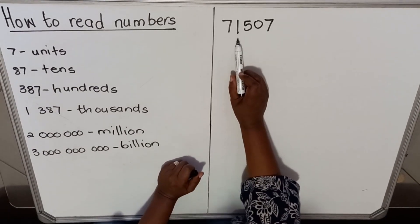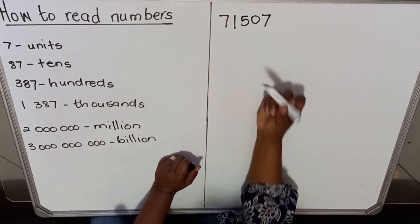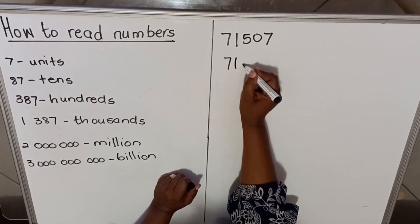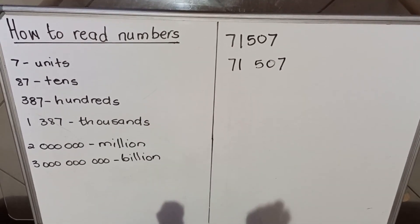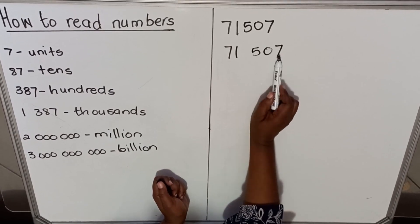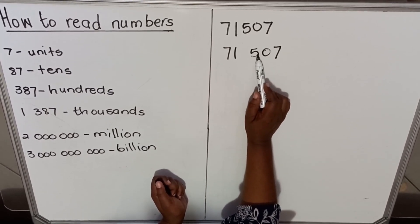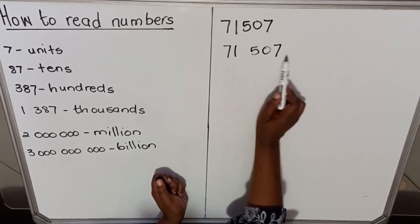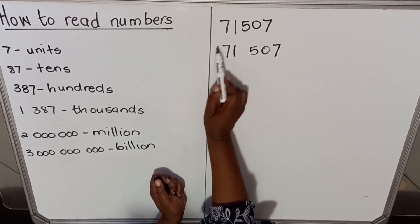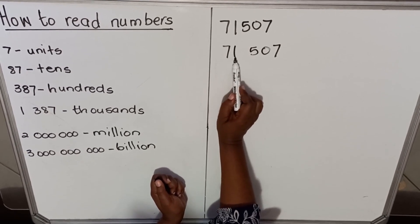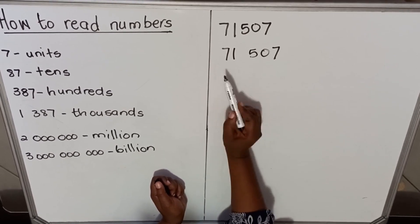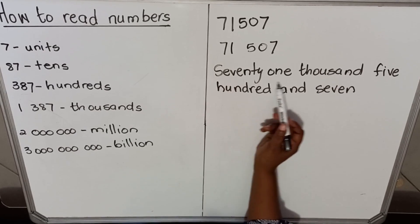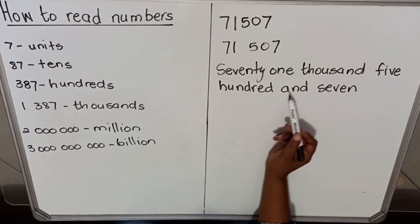Let's do two examples. When you look at this number it has one, two, three, four, five digits. To make it easier for yourself, make a space here. So it's one two three, space, one two three — that's how it's done. These are units, tens, hundreds, then thousands and ten-thousands. So this number is seventy one thousand. It doesn't have the tens, so it's five hundred and seven. The number is seventy one thousand five hundred and seven.